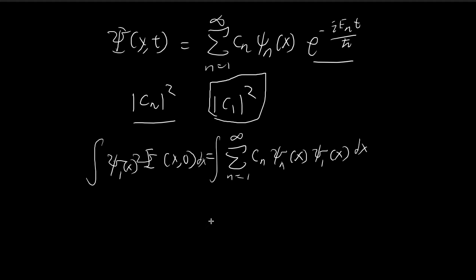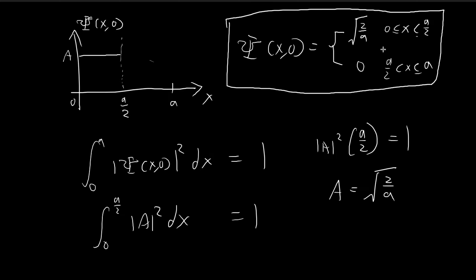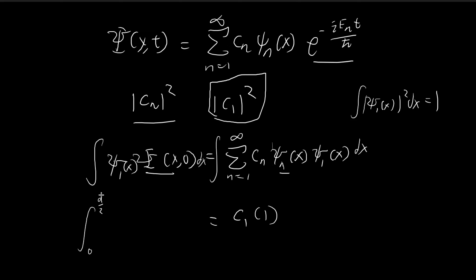Thanks to Fourier's trick, for all n not equal to 1, those terms are all equal to 0. So the only term left is c1 times the integral of the square of the first stationary state, which by definition is just equal to 1. On the left-hand side we have this integral, and it goes from 0 to A over 2 because that is the support of the initial wave function — everywhere else it's equal to 0.